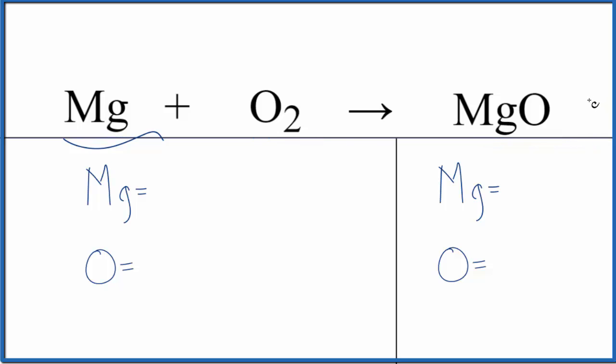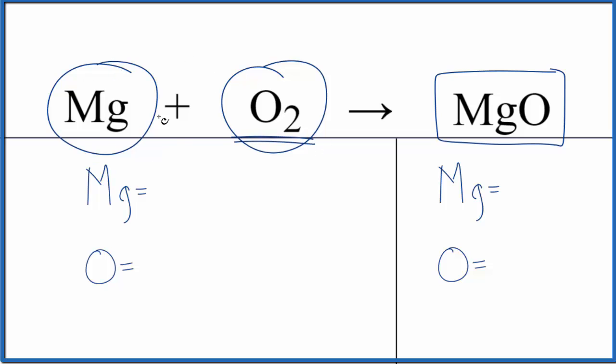We'll also look at the type of reaction and we'll write the states. Let's start with the type of reaction. We have these two things, the magnesium and the oxygen. They're combining to form one new substance. This is a combination reaction, also called a synthesis reaction. Because we have this oxygen here combining with our Mg, you could call this combustion as well.